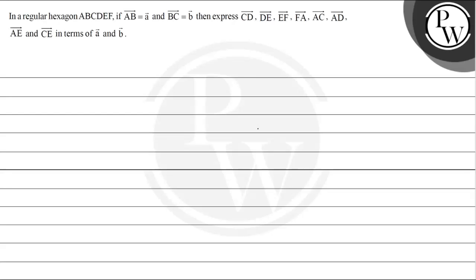Let's read this question: in a regular hexagon ABCDEF, if AB vector is a vector and BC vector is b vector, then express CD vector, DE vector, EF vector, FA vector, AC vector, AD vector, AE vector, and CE vector all in terms of a vector and b vector. We have a regular hexagon with vertices A, B, C, D, E, and F. This vector AB is a vector and BC vector is b vector.